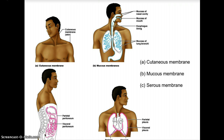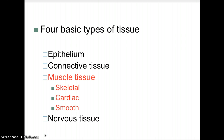In picture A you have the cutaneous membrane, which is the skin. In picture B you have mucous membranes — the mucosa of the nasal cavity, mucosa of the mouth, esophagus lining mucosa, and mucosa of the lung bronchi. Then you have the serous membranes: the parietal peritoneum, visceral peritoneum, parietal pleura, visceral pleura referring to the lungs, and the parietal and visceral pericardium — the membranes that surround the heart.